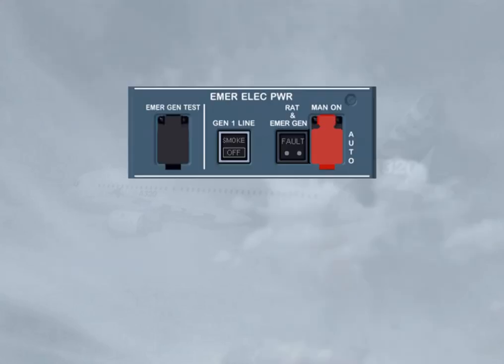The controls and indications on the emergency electrical power panel will be covered in the failure cases module, except for the emergency generator test switch, which is used by maintenance only to test the emergency generator and the static inverter.